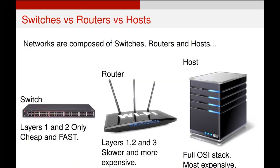The main components of networks are switches, routers, and hosts. Switches only operate on layers 1 and 2, and are very fast because they don't operate at any of the higher levels — but that means they can only pass traffic within networks. Routers are the next step up, slightly slower than switches, but allow the sharing of traffic between different networks — they allow inter-network communication. The full stack you'd see on a host machine: it could be a server, a client, an Android device, or anything like that, and it operates on every single level of the OSI model. Because of that, hosts are also the slowest and the most expensive.